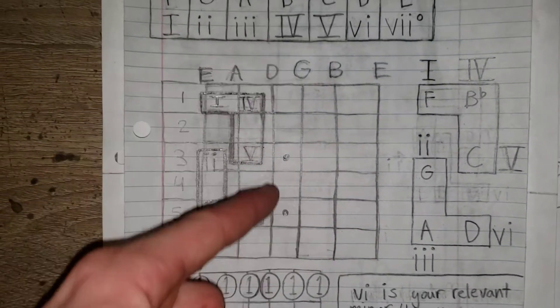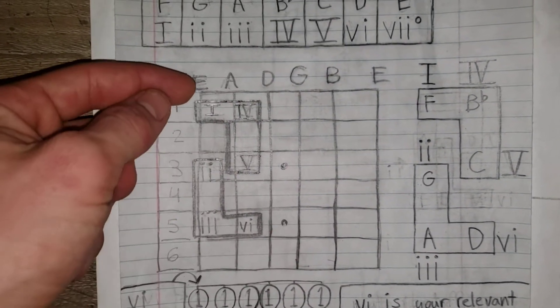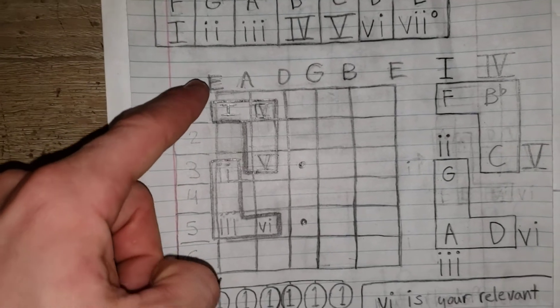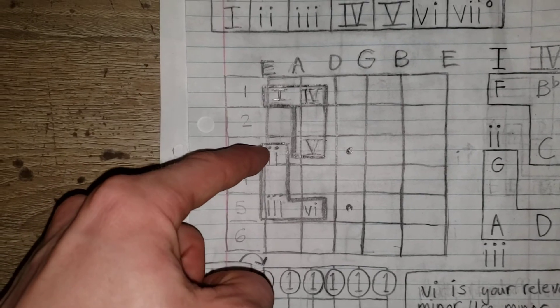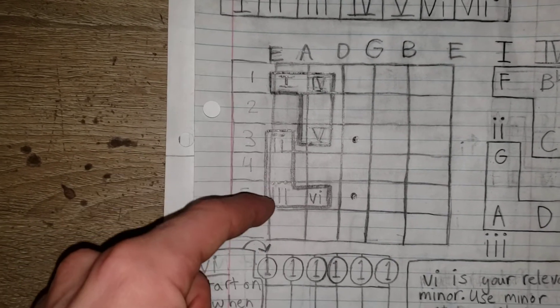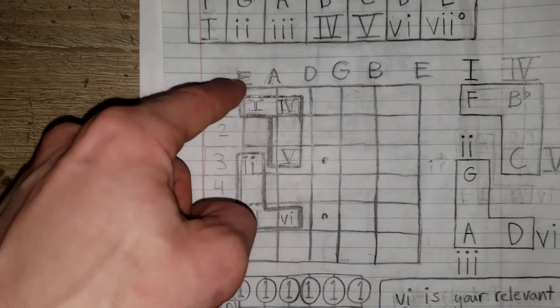So we go to our guitar fretboard. This is literally our first fret. We're going to go on our first fret, that's our 1. Third fret, that's our 2. Fifth fret, that's our 3. 1, 2, 3.